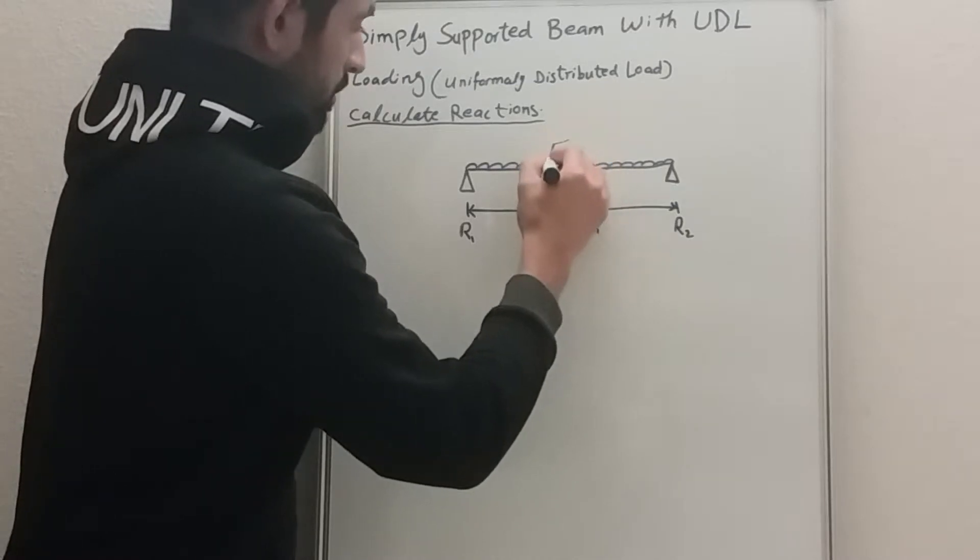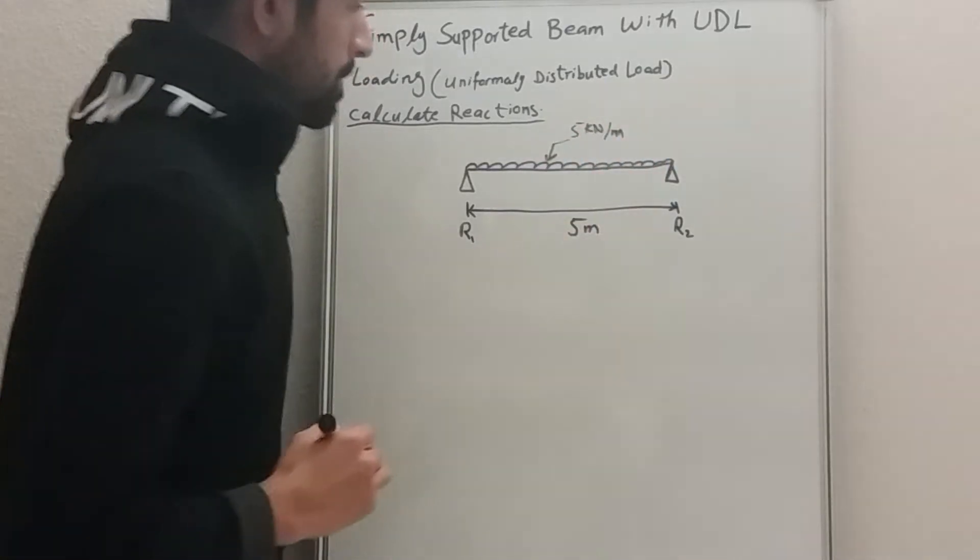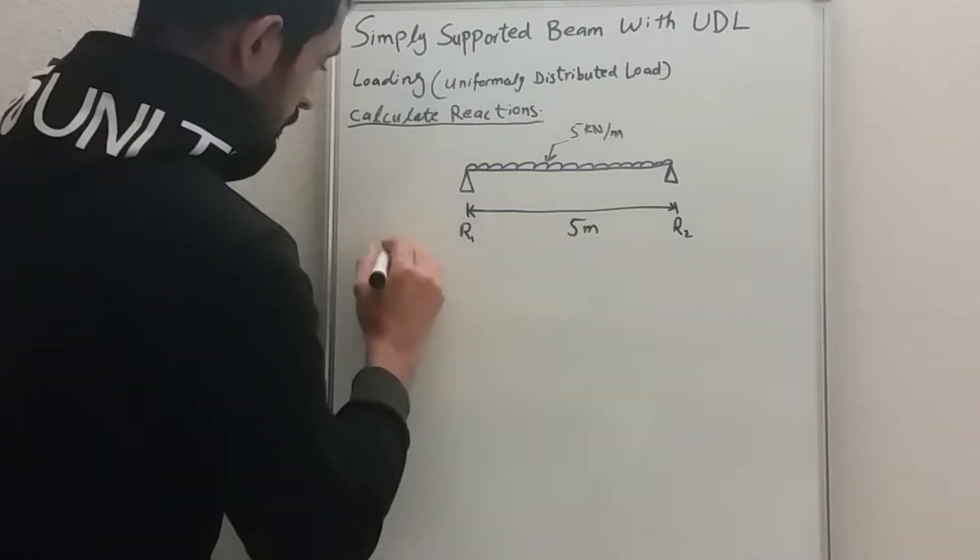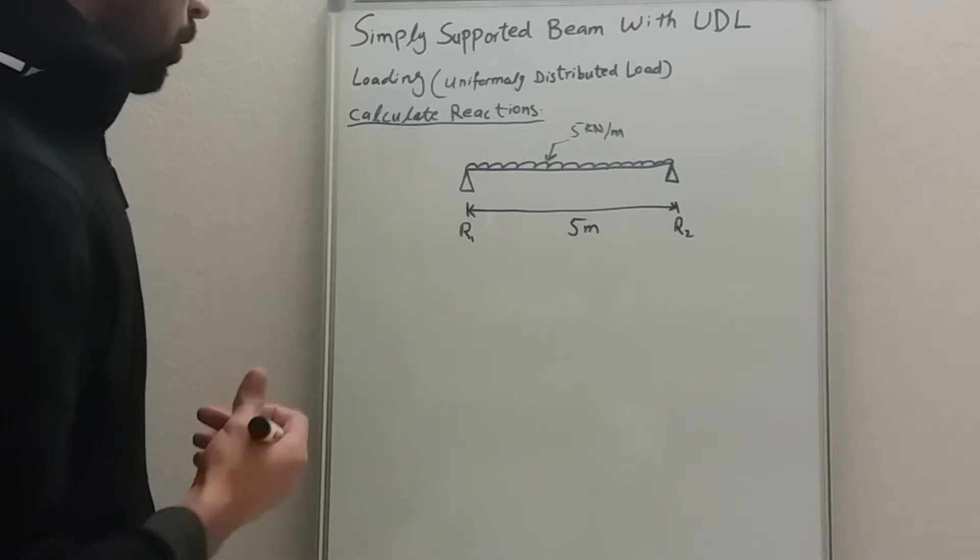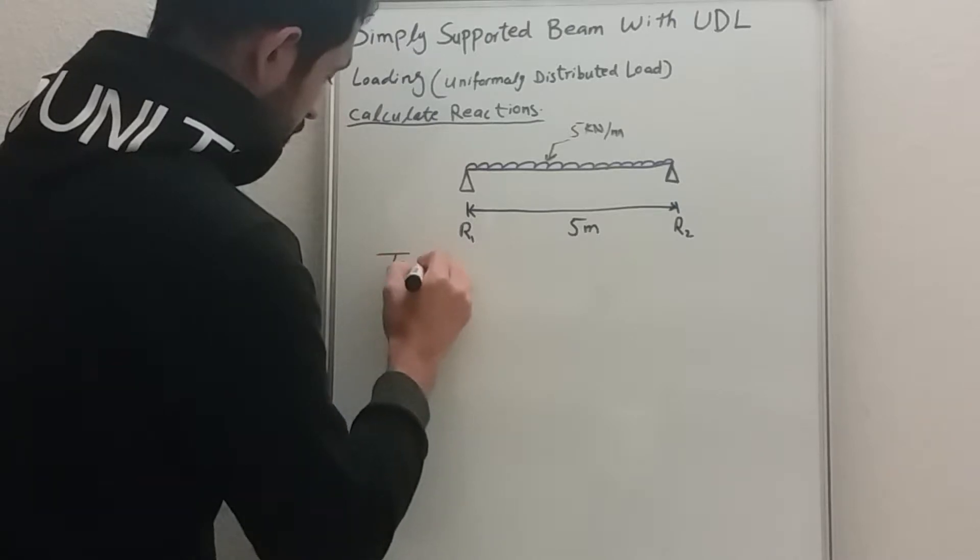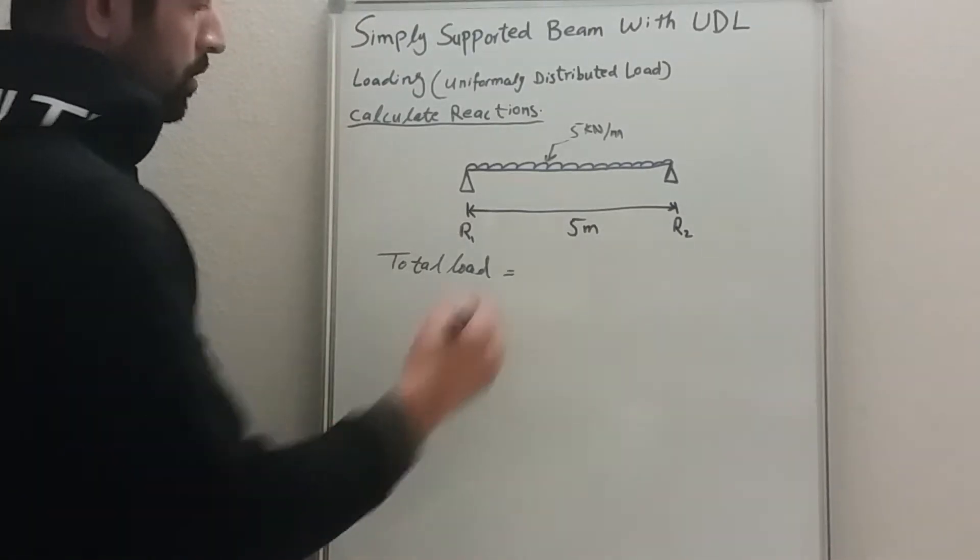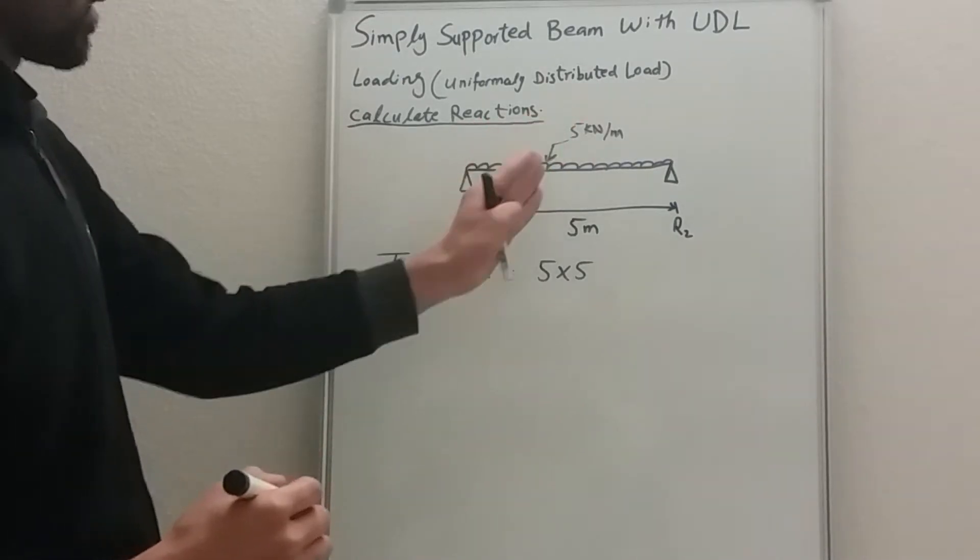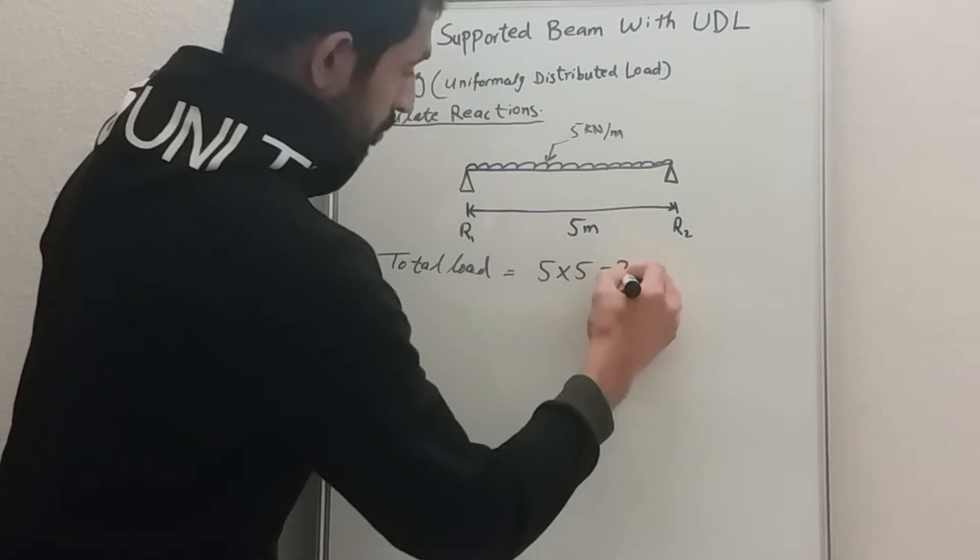This is UDL load and the rate of loading is 5 kilonewtons per meter. So how to solve the question? First of all, we need to calculate what is the total load on the beam. Total load is equal to 5 times 5, because 5 kilonewtons per meter and we have 5 meters, so 5 times 5 is going to be 25 kilonewtons.